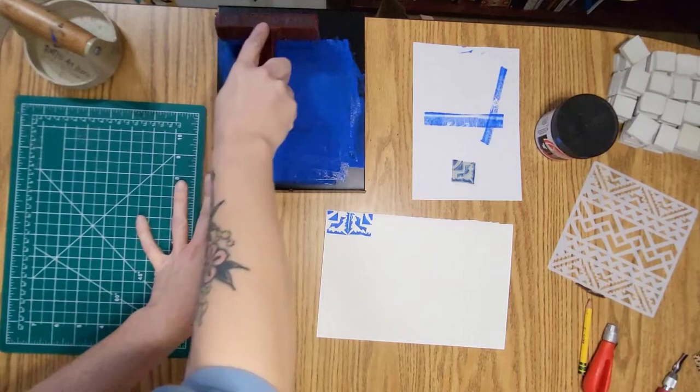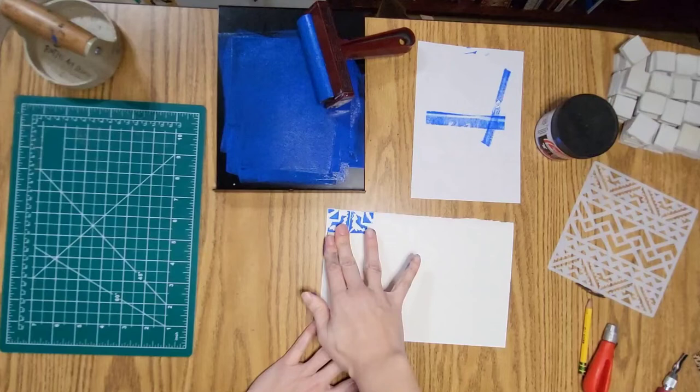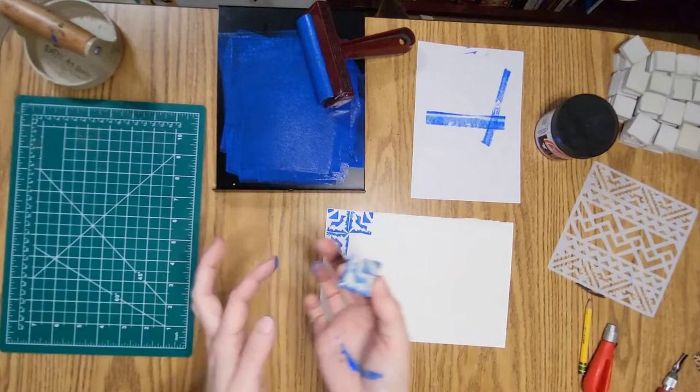So when we're doing our final block prints, we'll use one of those tools with a handle called a barren. But we're not going to use those today because it will kind of press into your block too much and cause your ink to smear. So continue on stamping and I'm going to put this on time-lapse to speed it up for a minute.